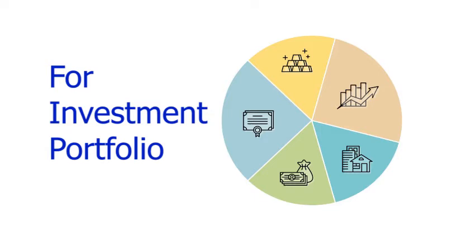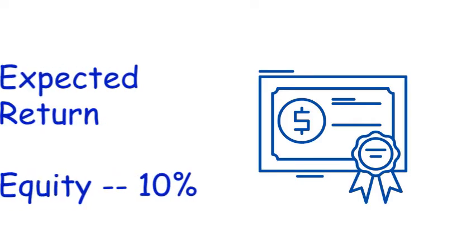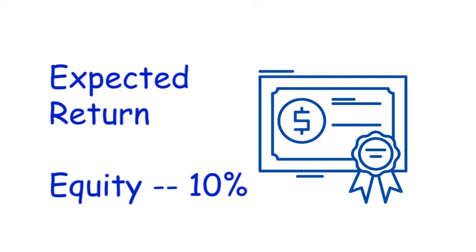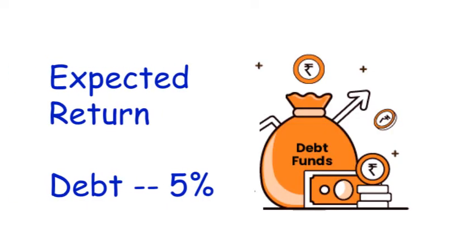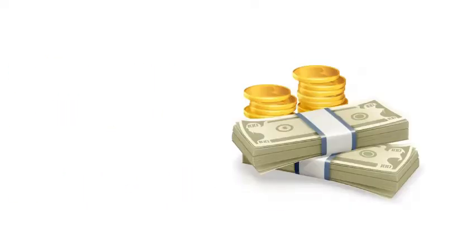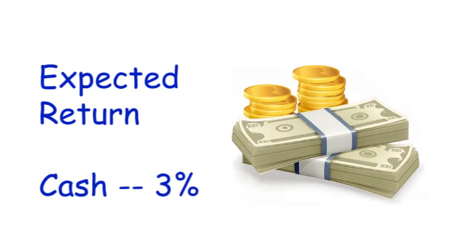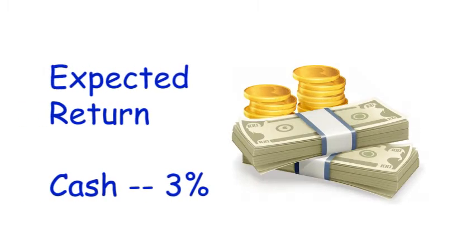It states that the average expected return of equities must be 10%, debt must be 5%, and liquid cash must be 3%. Shall we discuss with one example?